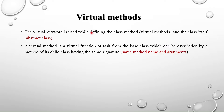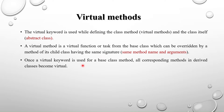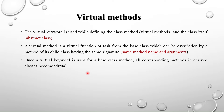Once a virtual keyword is used for the base class method, all the corresponding methods in the derived classes automatically become virtual. So if the base class has a virtual display function and it has three inherited classes, all those child classes will have the display method as virtual by default — you don't need to explicitly write virtual in the child class.